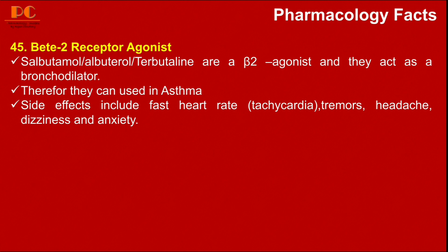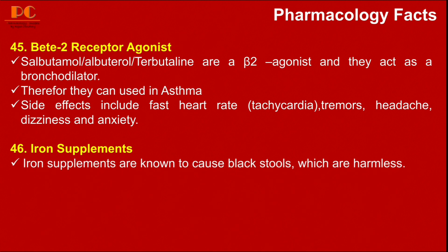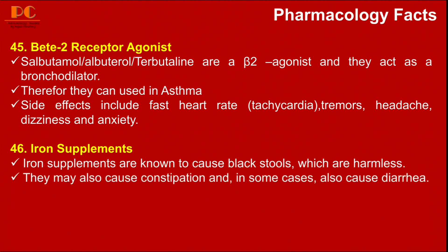So those are the basic side effects of beta-2 receptor agonists like salbutamol, albuterol, and terbutaline. The next fact is about iron supplements. Iron supplements are known to cause black stools, which are harmless and common. They may also cause constipation, and in some cases diarrhea. These gastrointestinal effects can occur with long-term use.